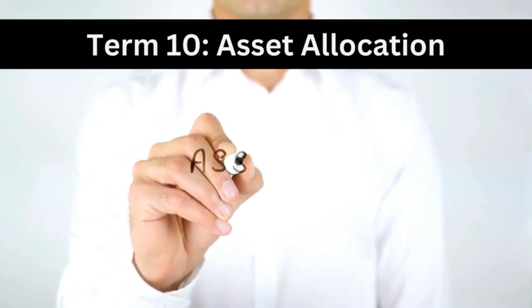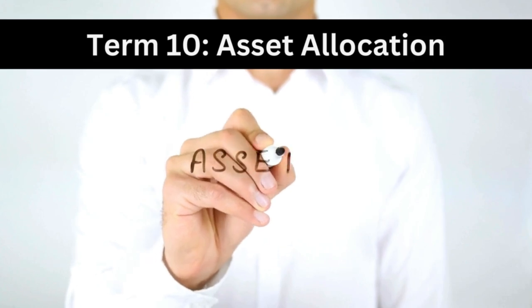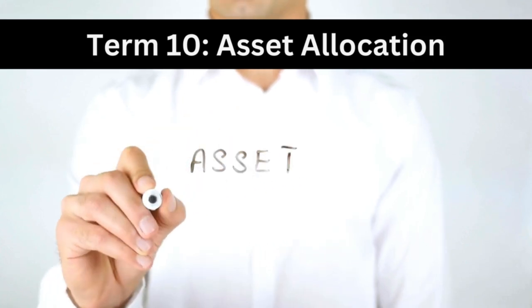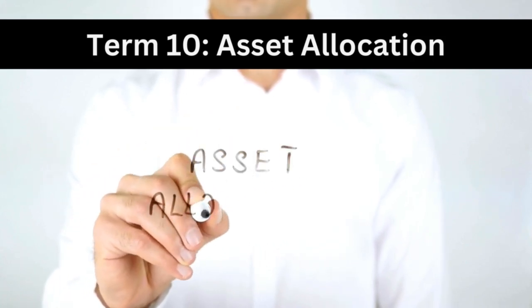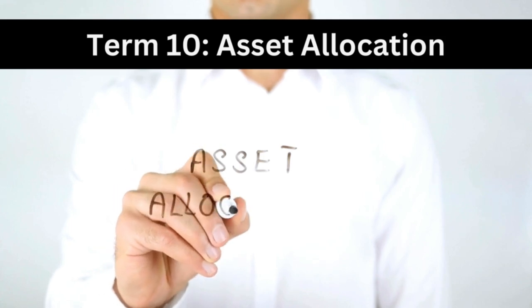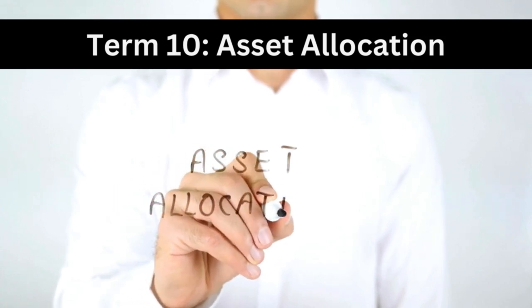Term ten: Asset Allocation. Asset allocation is the process of dividing your investment portfolio among several asset categories, such as stocks, bonds, and cash, to balance risk and reward according to your goals.